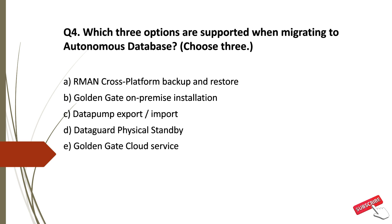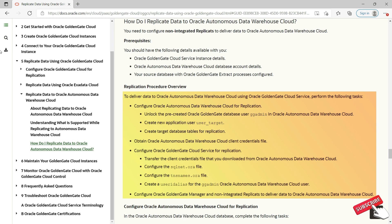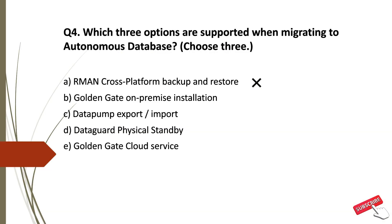Analyzing the options — Option A: RMAN Cross-Platform Backup and Restore is incorrect; you won't be able to migrate to Autonomous Database with RMAN Cross-Platform. Option B: GoldenGate On-Premise Installation — to deliver data to Oracle Autonomous Data Warehouse Cloud using Oracle GoldenGate Cloud Service, you configure ADB for replication, obtain the client credential file, configure GoldenGate Cloud Service for replication, and configure GoldenGate Manager and replicas to deliver data. So Option B is correct.